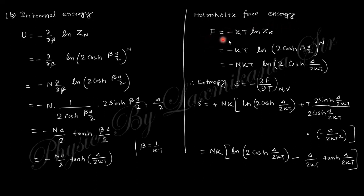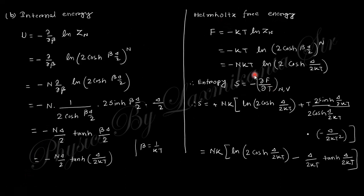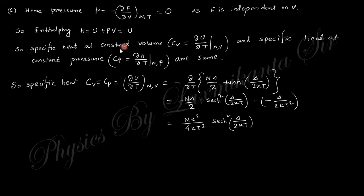The Helmholtz free energy is F = −kT·ln Z_N. Substituting ln Z_N gives F = −NkT·ln[2cosh(βΔ/2)]. The entropy is S = −∂F/∂T. Differentiating: the first term gives Nk·ln[2cosh(βΔ/2)], and the second term involves the derivative of the logarithm, giving a tanh term. The final entropy expression combines both these contributions.